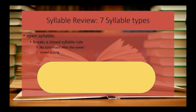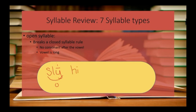The next syllable for review is an open syllable. An open syllable breaks the closed syllable rule — it has no consonant after the vowel and the vowel is a long sound. For example, the Y sound in a word like sly: the Y is a long vowel making that I sound, so it's an open syllable. We can also have words like hi. In words like relax, the first syllable is an open syllable because the E is long and comes to the end of a syllable, whereas the second syllable is a closed syllable.